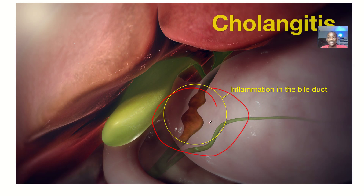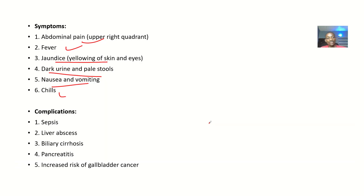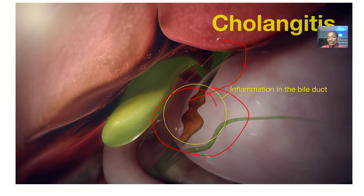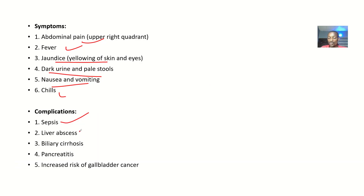Talking about the complications — if this condition is left untreated: if there's a bacterial infection, the infection can spread into the blood and the whole body reacts to it — that's what we call sepsis. Contents could be held back for a very long time, leading to pus formation — a collection of pus known as an abscess. There could also be biliary cirrhosis, pancreatitis, and an increased risk of developing gallbladder cancer.